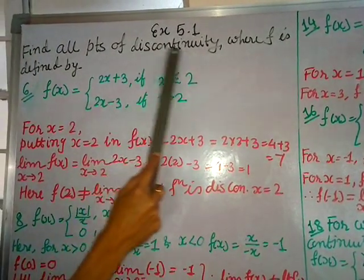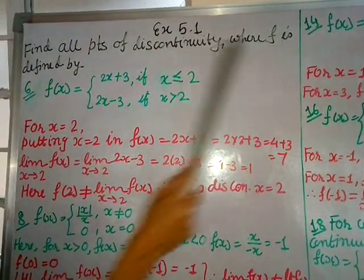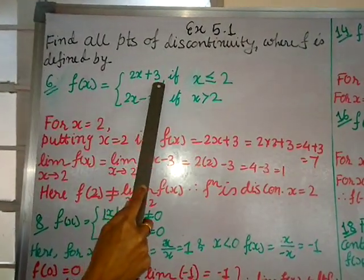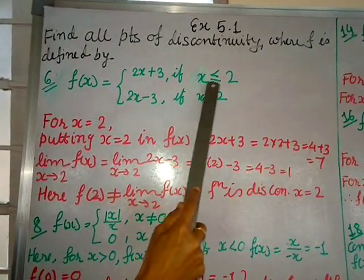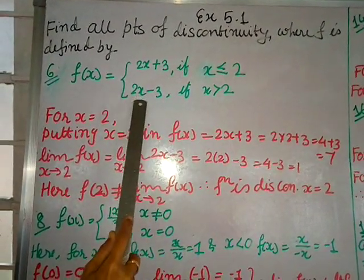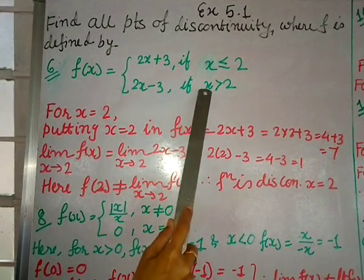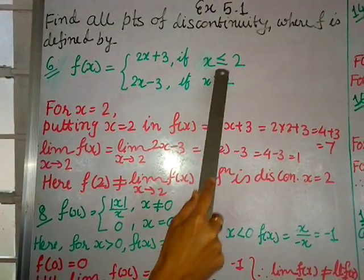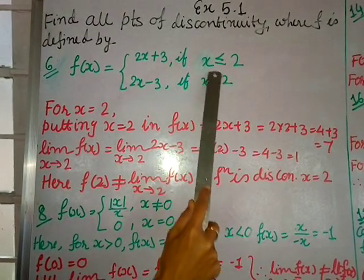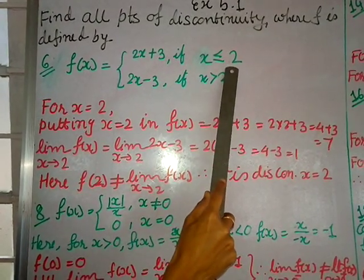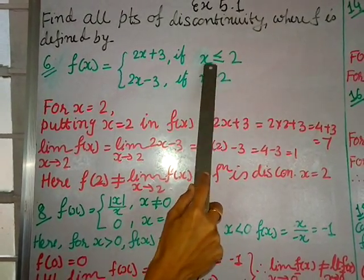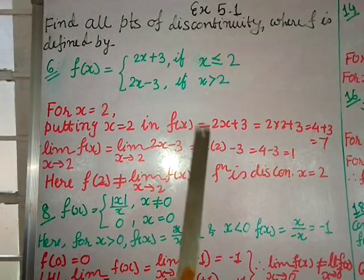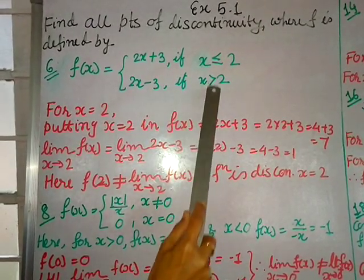Question 6: Find all points of discontinuity where f is defined by f(x) = 2x + 3 if x ≤ 2, and 2x − 3 if x > 2. Here you are given two conditions — two functions with two conditions. Since x ≤ 2 and x > 2, you have to check for x = 2 first.